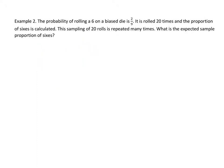Example 2. The probability of rolling a 6 on a biased die is 2/9. It's rolled 20 times and the proportion of 6s is calculated. This sampling is repeated many times. What's the expected sample proportion of 6s? This actually requires no calculation. The long-term expected value of p hat should be p, and that's given to you as 2 out of 9.